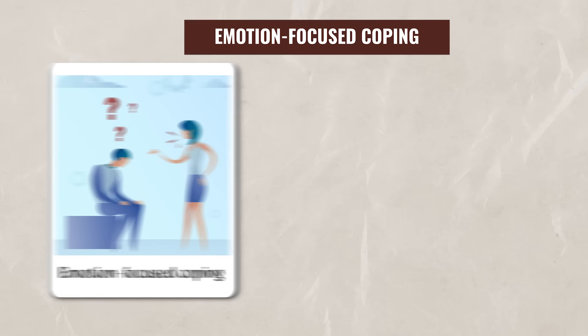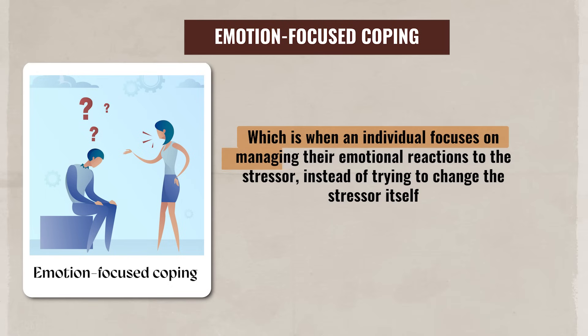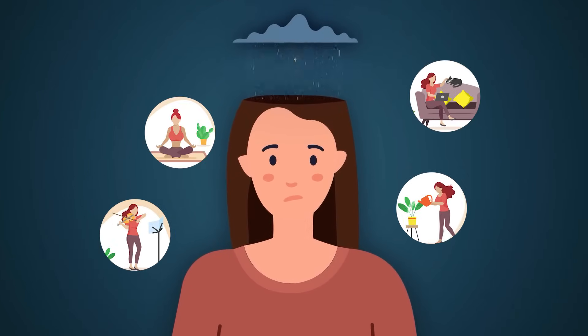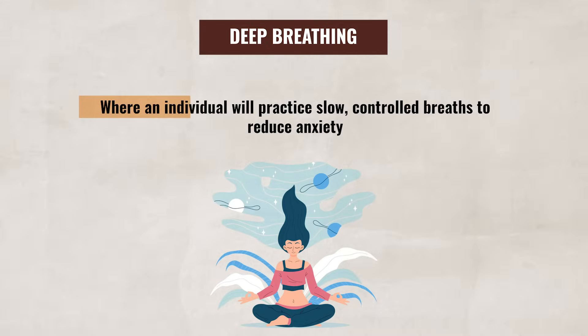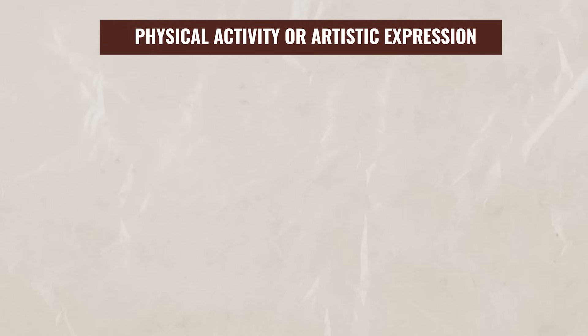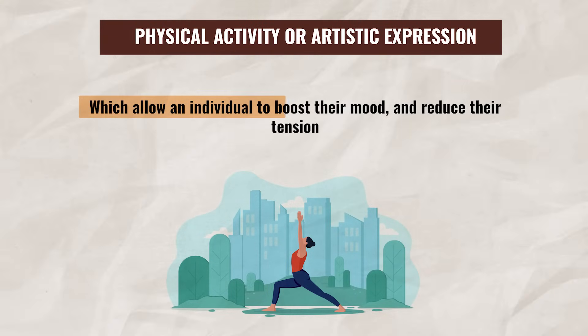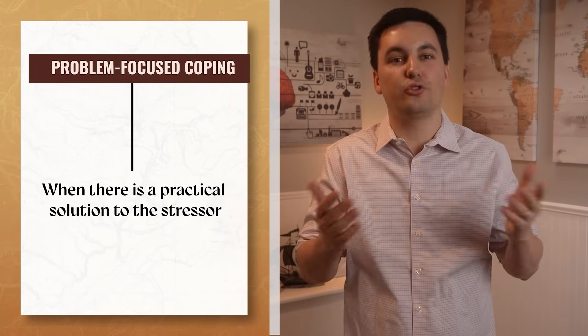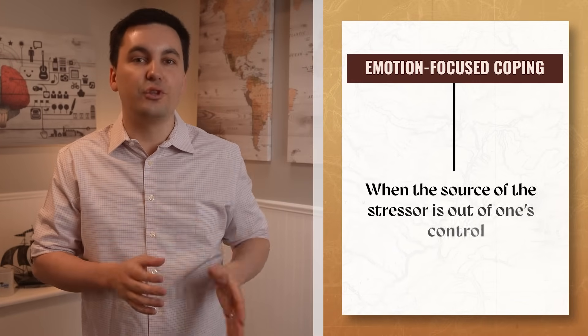The other coping strategy is Emotion-Focused Coping, which is when an individual focuses on managing their emotional reactions to the stressor instead of trying to change the stressor itself. This can involve a variety of practices, such as relaxation techniques including deep breathing — practicing slow, controlled breaths to reduce anxiety — meditation and mindfulness focused on being in the present moment, medication that helps reduce stressful emotional responses, or physical activity and artistic expression to boost mood and reduce tension. An individual may also seek out support and talk through the situation with friends, family, or counselors. Both problem-focused and emotion-focused coping strategies have value. Generally, problem-focused coping works best when there is a practical solution, while emotion-focused methods are more effective when the source of stress is out of one's control.